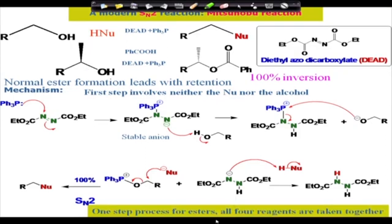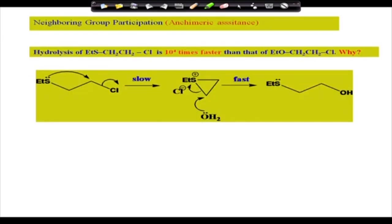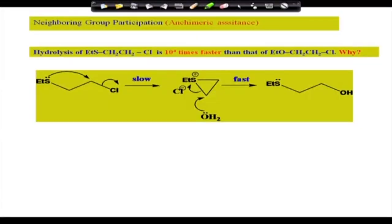This Mitsunobu reaction is a one-step process for ester formation with inversion, using four components reacting together — DEAD, triphenylphosphine, the nucleophile, and the starting alcohol — and it is high-yielding. To summarize: SN2 reactions lead to inversion; SN1 reactions ideally give racemic mixture, but ion-pair formation often leads to more inversion than retention. There are also cases of complete retention of configuration, which occur when neighboring group participation takes place.